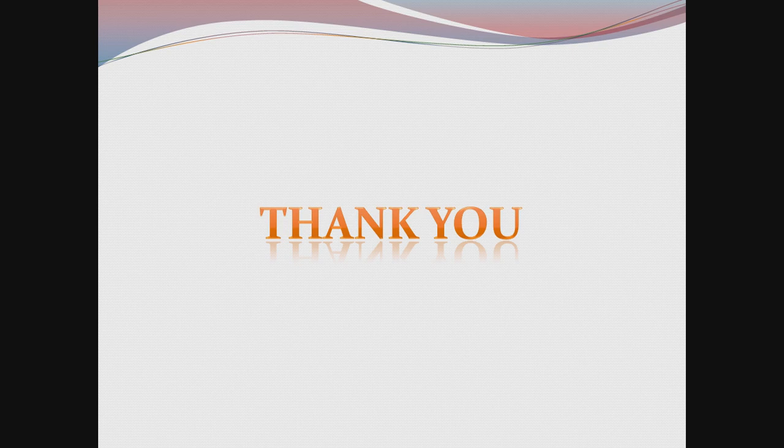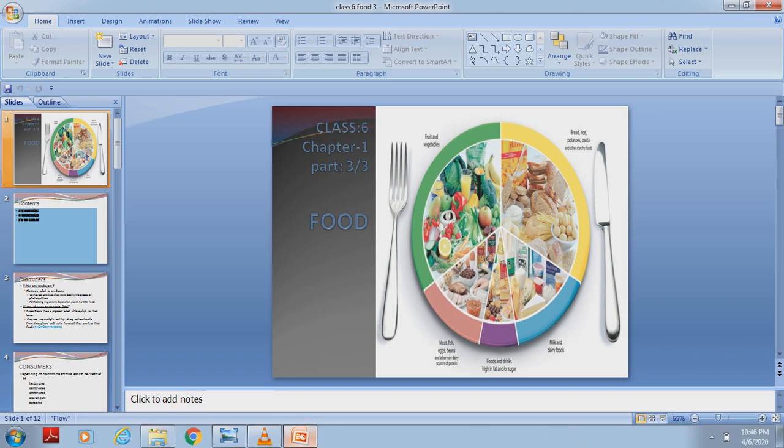In this chapter, we have completed: what is food, what are the functions of food, varieties of food, ingredients of food, food materials and their sources, edible parts of the plant, plants as producers, different types of animals, and food chain. Thank you.